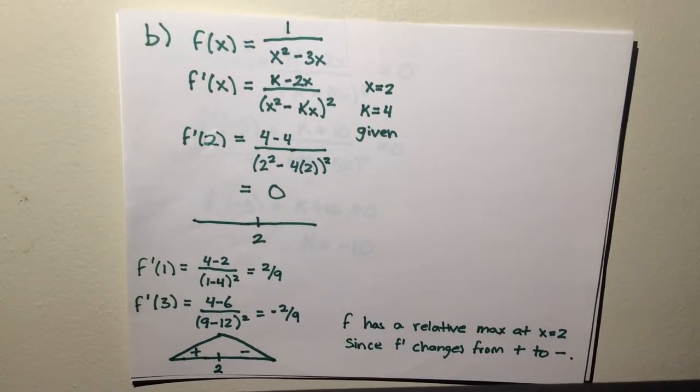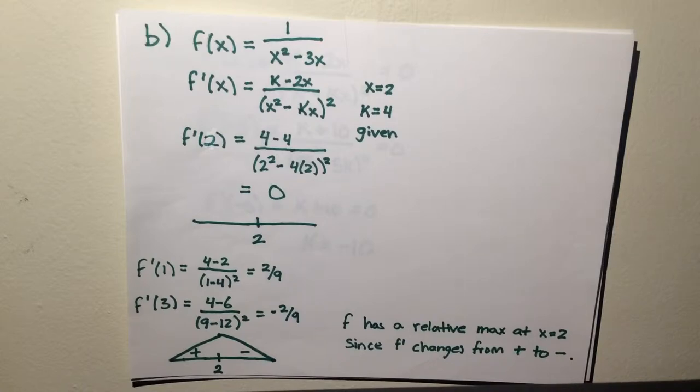The directions for part b are: let k equals 4, so that f(x) equals 1 over x squared minus 4x. Determine whether f has a relative min, a relative maximum, or neither at x equals 2. Justify your answer.